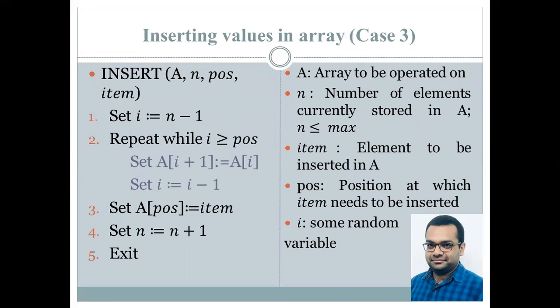Here, A is the array that needs to be operated on. n is the number of elements that are currently stored in the array. The value of n is less than or equal to max, where max is defined using a macro. And its value depicts what is the maximum number of elements that can be stored in an array. Item is that element that needs to be inserted in an array. And pos is the position at which item needs to be inserted. i, we have used as some random variable in our program. Any other variable can also be used.